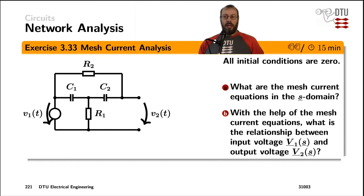And also an exercise for the mesh current analysis. Assuming that all the initial conditions in the circuit are zero, so the voltages across C1 and C2 are zero to start with. What are the current equations in the s-domain? And then with the help of the mesh current analysis, determine the relationship of the input voltage V1 and the output voltage V2 in the s-domain.